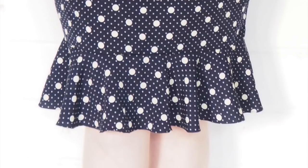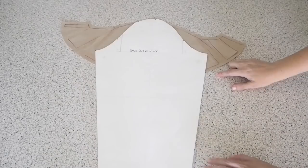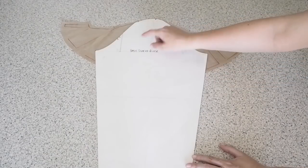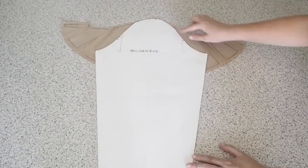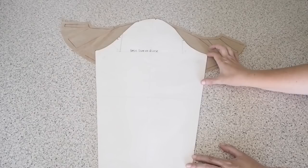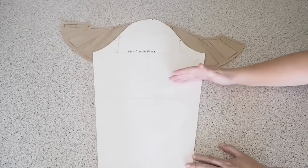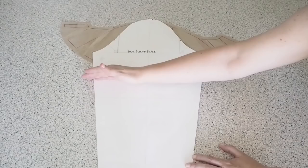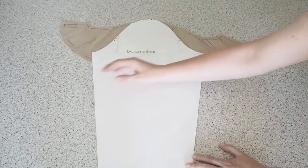And then I thought it would be useful just to show that you can use this same method on any pattern piece. So if you want a flounce sleeve, use exactly the same method. Just measure down the sleeve what length you want it to be and then use this slash and spread method.